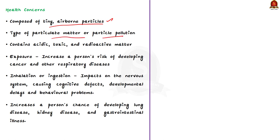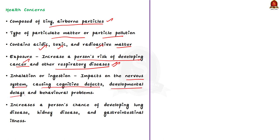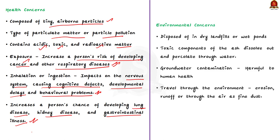Fly ash is a pollutant containing acidic, toxic, and radioactive matter. Significant exposure to fly ash and other components of coal ash is said to increase a person's risk of developing cancer and respiratory diseases. Inhalation or ingestion of toxins in fly ash impacts the human nervous system, causing cognitive defects, developmental delays, and behavioral problems, and also increases the risk of lung disease, kidney disease, and gastrointestinal illness.